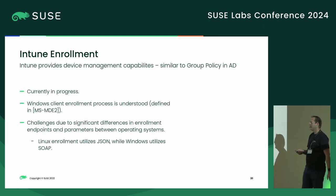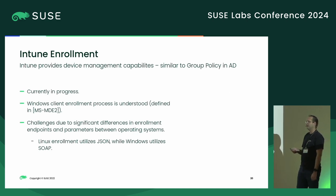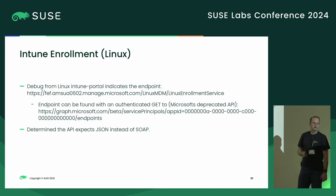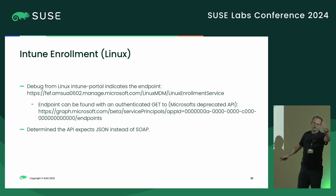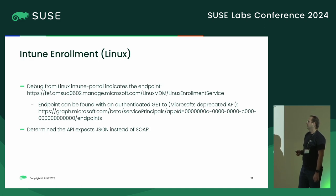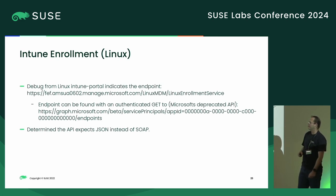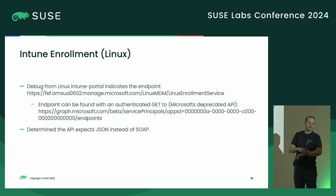I discovered that I'm supposed to talk to a specific Linux enrollment endpoint and need to use JSON, while the Windows one uses SOAP. I've been sending random requests trying to figure out what parameters it expects and I can't figure it out yet. My next attempt — I think I'll probably fuzz it. Microsoft will love that.